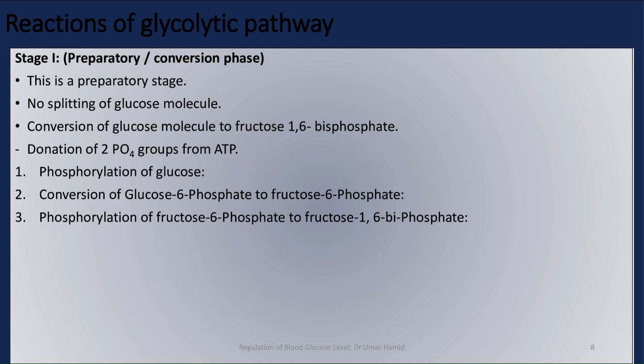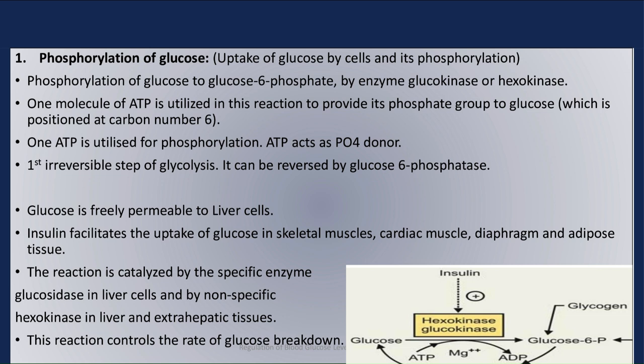Step 1 is the phosphorylation of glucose to glucose-6-phosphate by the enzyme glucokinase or hexokinase. One molecule of ATP is utilized in this reaction to provide its phosphate group to glucose, which is positioned at carbon number 6. ATP acts as the phosphate donor. This step is the first irreversible step of glycolysis, which can be reversed by glucose-6-phosphatase in gluconeogenesis.